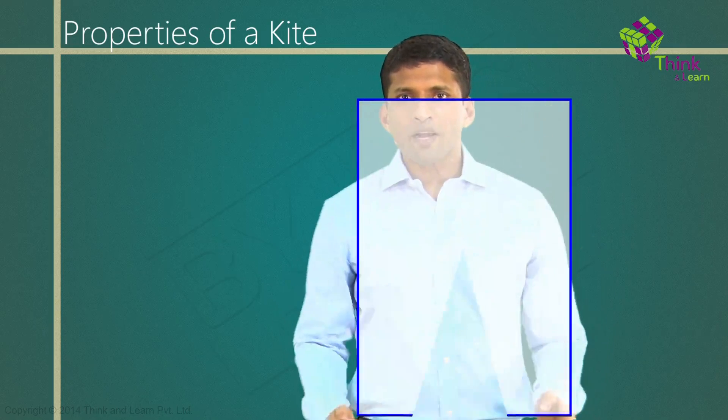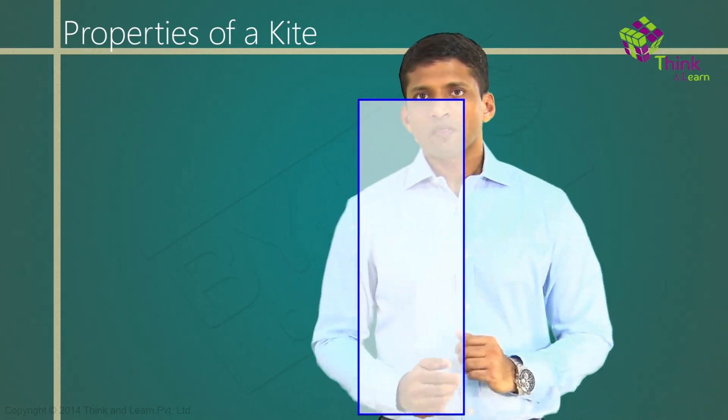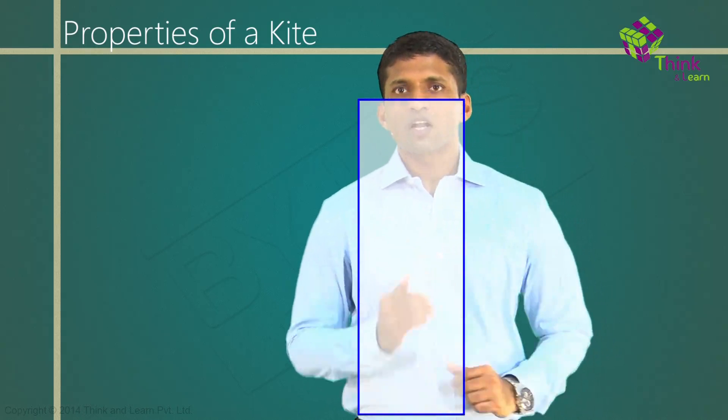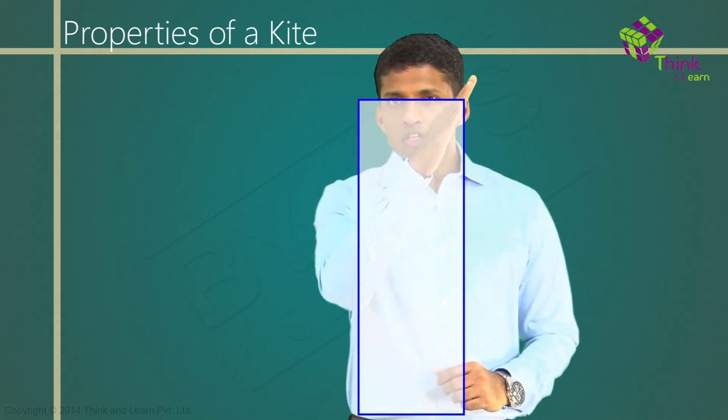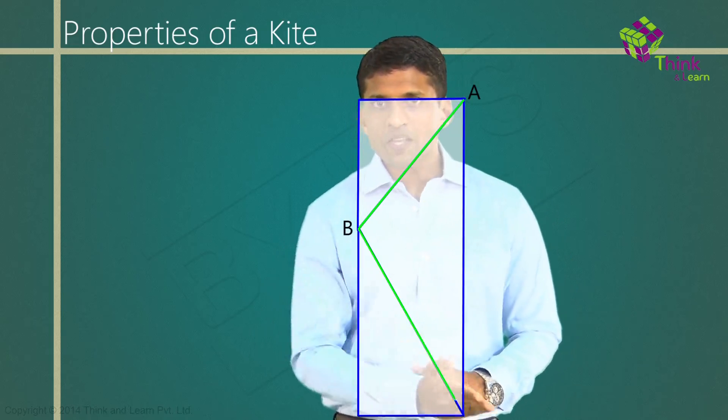Take a rectangular paper like this and along this line, fold this rectangular paper. So, just once. Now, draw two line segments of different lengths like this, AB and BC.